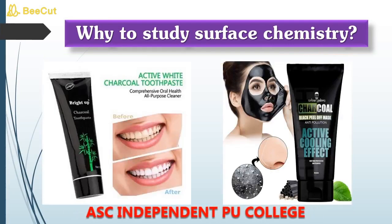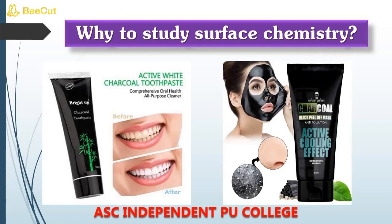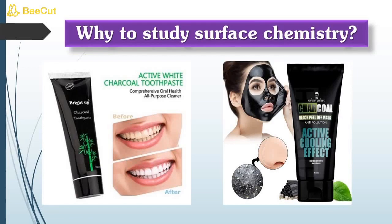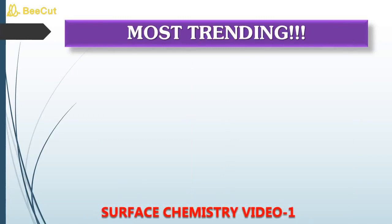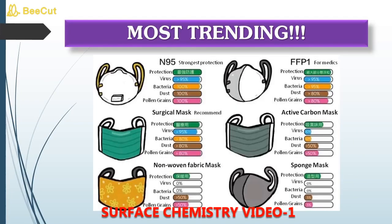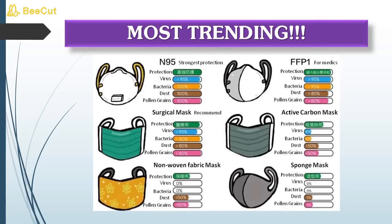Next, two are the recent applications of surface chemistry. The first one is charcoal peel-off mask, which removes the tanning of skin. And the later is charcoal toothpaste, which removes colorant from the tooth. Then here we go. Due to Corona crisis, the most trending thing is considered to be mask, which also uses the theme of our surface chemistry.